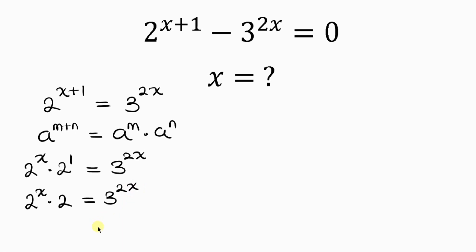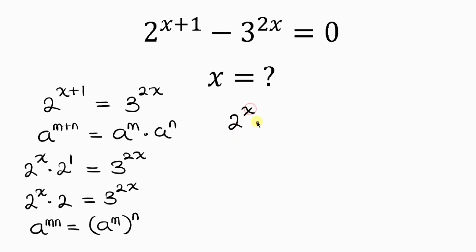Our next step is to apply the law of indices that says a to the m times n is the same as a to the m, all raised to the n. Applying this to the right hand side, 3 to the 2x can be written as 3 to the 2, all raised to the x.